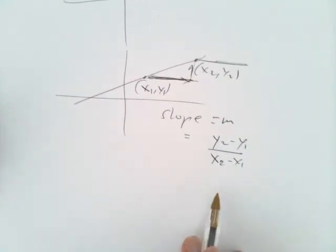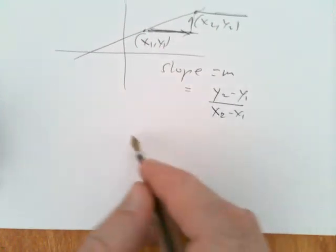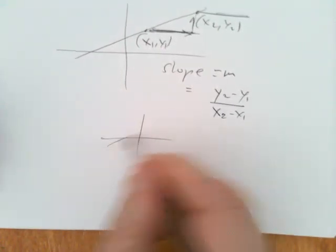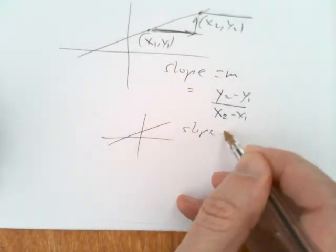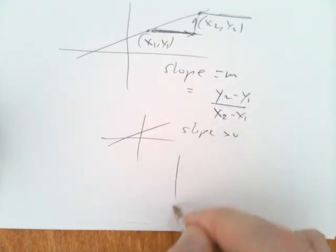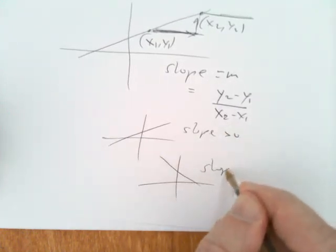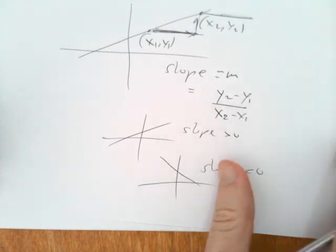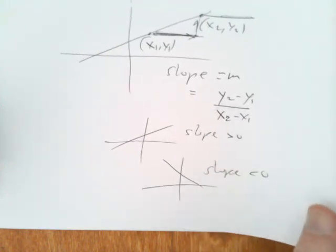That'll be our slope. If that's positive, it's going up. If slope is negative, it goes down. So we get some idea of what we're talking about.